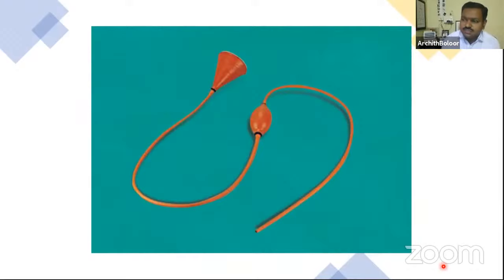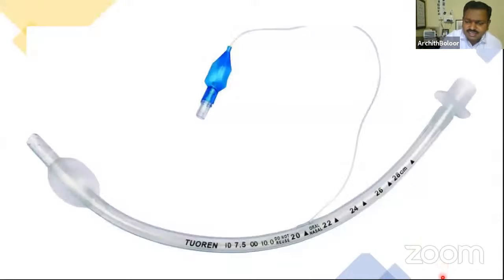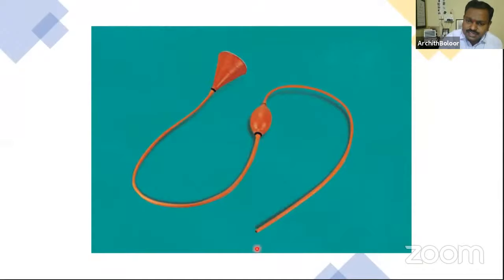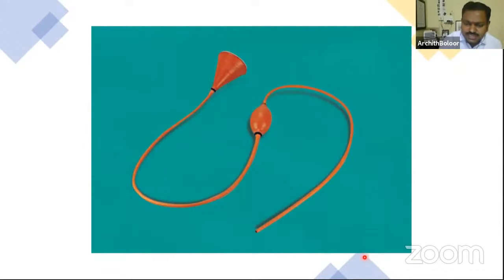There are two gastric lavage tubes: the Ewald's tube and the Boaz tube. The difference is the Boaz tube has a siphon while the other has a funnel. The end with the tube goes into the stomach; the funnel end stays outside. Saline is poured through the funnel and lifted up so it enters the stomach, then the funnel is removed and the empty tubing is lowered to siphon stomach contents out.